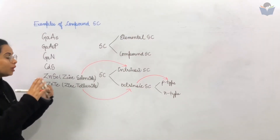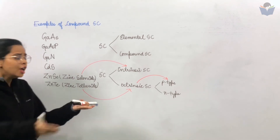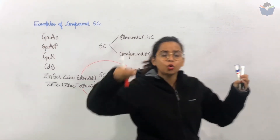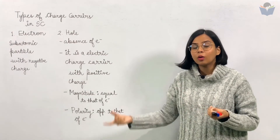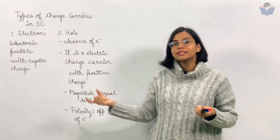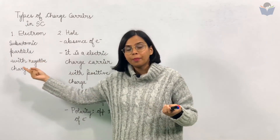Now you have a very good clarity that you will not get anywhere. You will tell the electron what is very good — it is a subatomic particle.